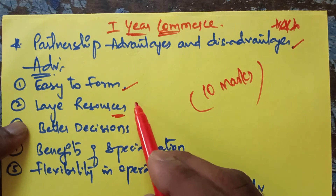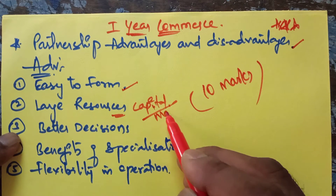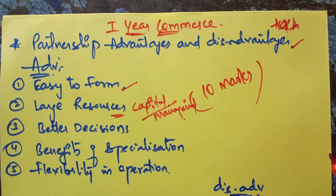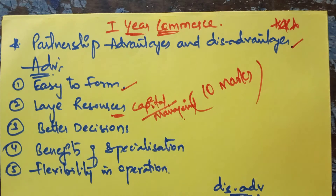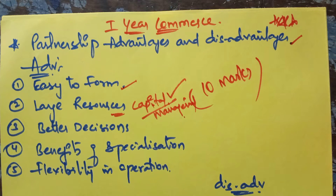The next advantage is large resources. Capital can be gathered — larger than what you gather in sole trading. In sole trading, only a single person arranges all the capital, but in partnership, capital is arranged by two or more members. The minimum number is two and the maximum is 10 or 20, so all those members gather money, making the total capital larger than in sole trading.